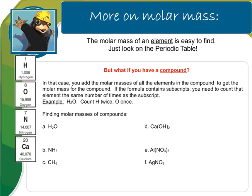But what if we have a compound? The molar mass of an element is easy to find — you just look it up on the periodic table. If we have a compound, you have to add the molar masses of all the elements in the compound together to get the molar mass for the entire compound. If the formula contains subscripts, you need to count that element the same number of times as the subscript. For example, in H2O you would count hydrogen twice and oxygen once.